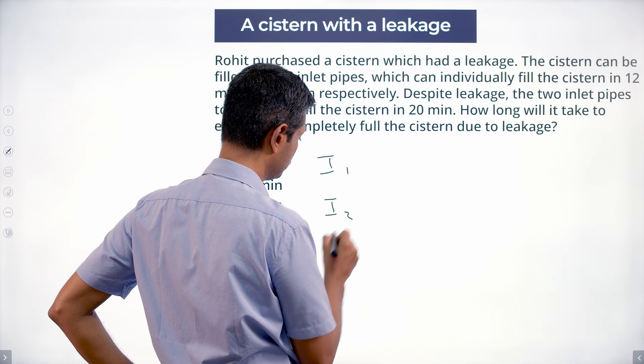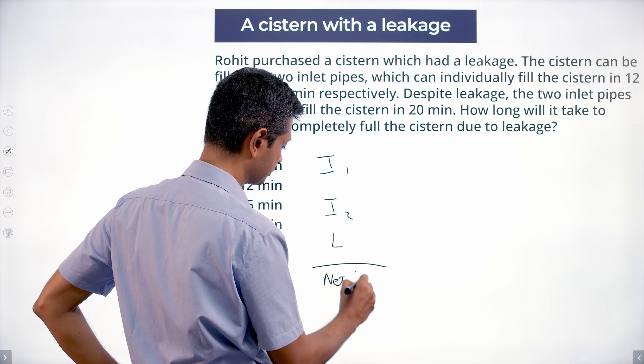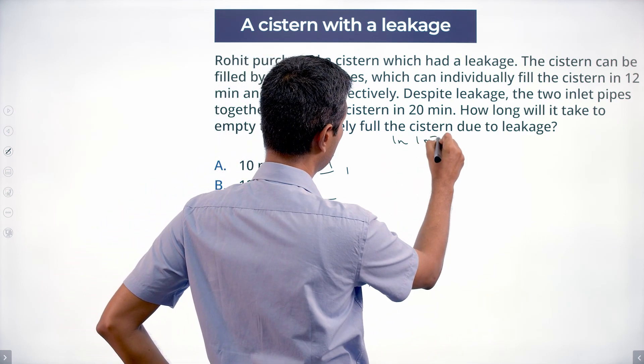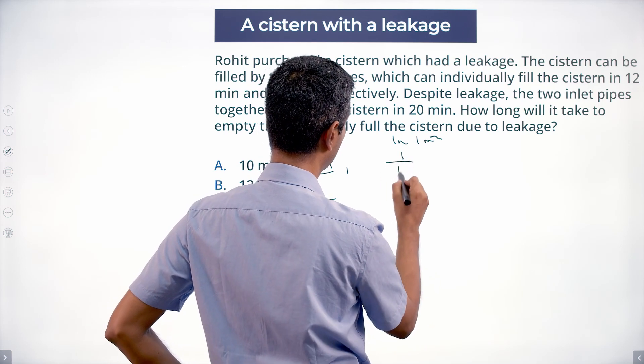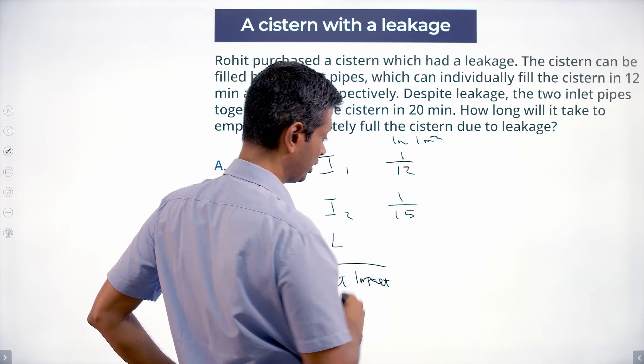inlet pipe two, leakage pipe, net impact. In one minute, inlet pipe one can fill one twelfth of the tank. In one minute, inlet pipe two can fill one fifteenth of the tank.